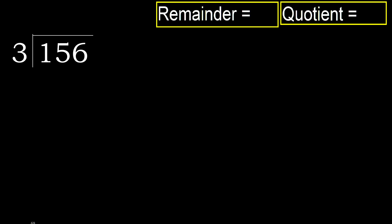156 divided by 3. 1 is less, therefore take the next digit. 15 is not less, therefore work with 15. 3 multiplied by which number is nearest to 15?